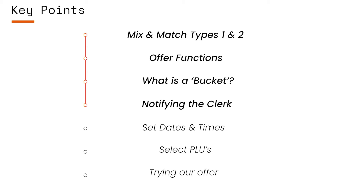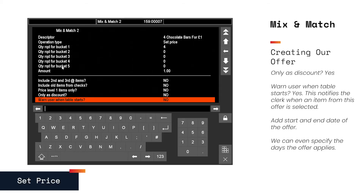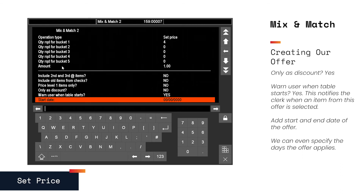Notifying the clerk. We want our clerk to know when an offer is on, so if we set this function to yes, our clerk will be notified when a chocolate bar from our offer is scanned.